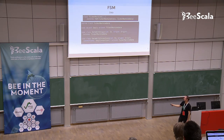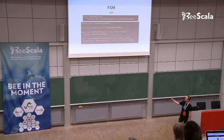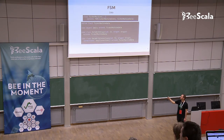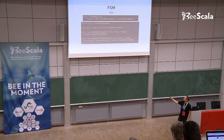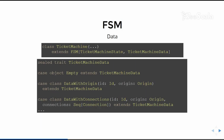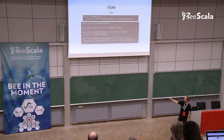The state type is simply a trait and several objects named accordingly to the diagram, and they all extend that state trait. Another thing is the data. We've got a TicketMachineData trait, with objects or case classes. The first data is just an empty object with no useful information. Then we've got actual case classes with actual data: DataWithOrigin includes the ID of the process and the origin station, DataWithConnections holds the soonest connections list, and so on.